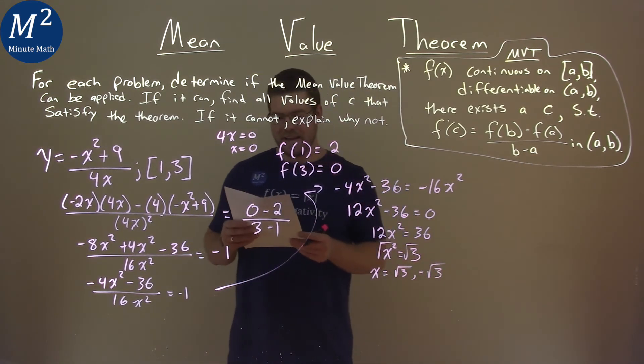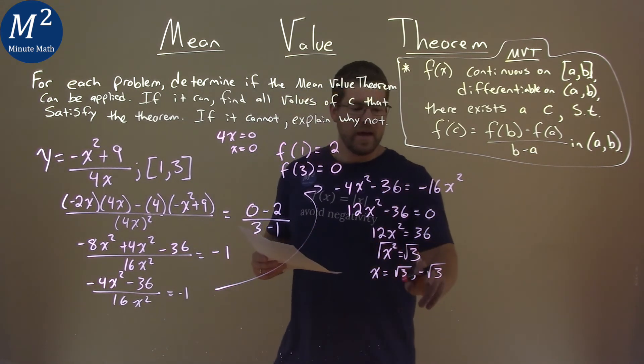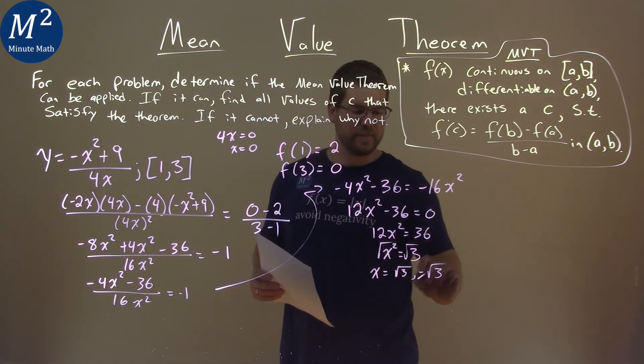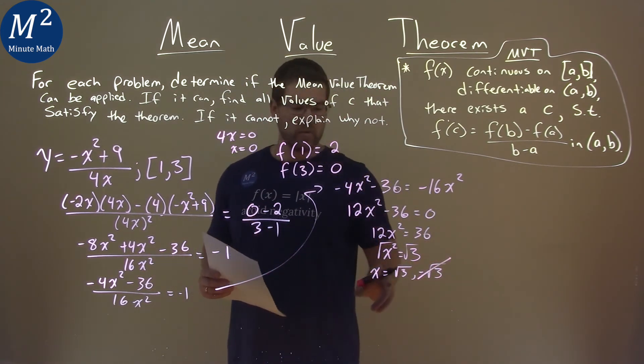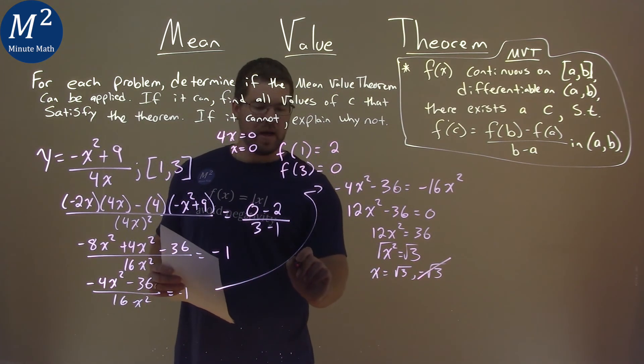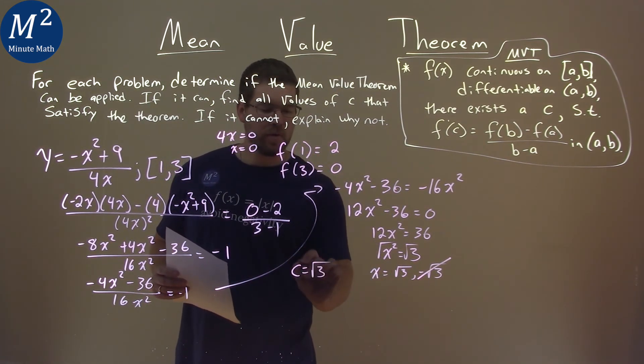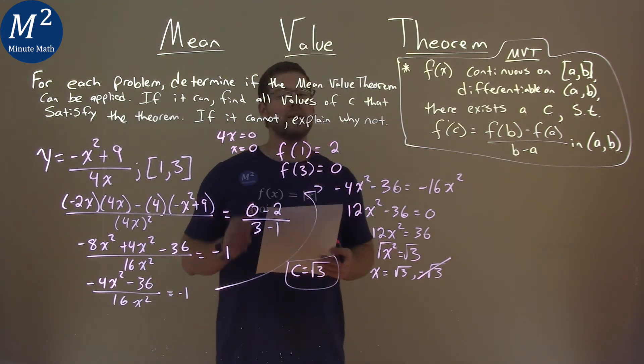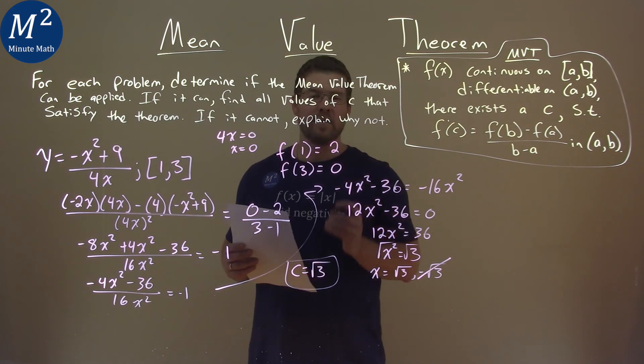Okay, so we have positive square root of 3 and negative square root of 3. Negative square root of 3 is outside of our interval from 1 to 3, so we can't use that. So we can only use square root of 3, which is inside of our interval. And so our c value is equal to the square root of 3, and that c value satisfies the mean value theorem.